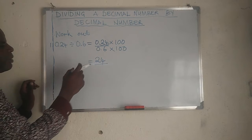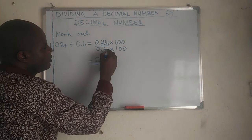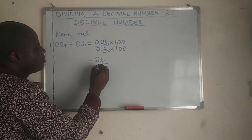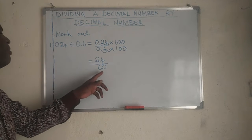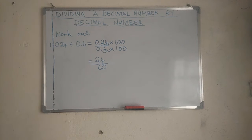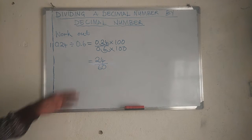Then when the decimal point moves here, 0.6 times 100 becomes 60. So it's going to be 24 divided by 60. Now I have whole numbers.